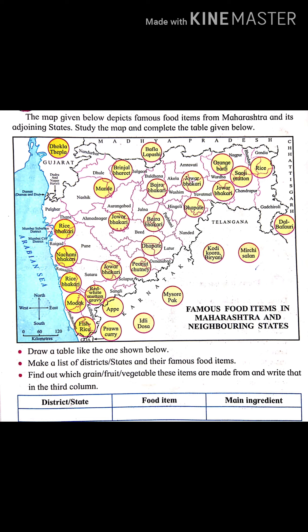Famous food items in Goa are rice and prawn curry, etc. Famous food items in Madhya Pradesh are Bafla and Lapsi. Famous food items in Chhattisgarh are Dal and Fauri. Famous food items in Andhra Pradesh are Biryani, Mirchi Salan. Famous food items in Karnataka are Mysore Pak and Idli Dosa.